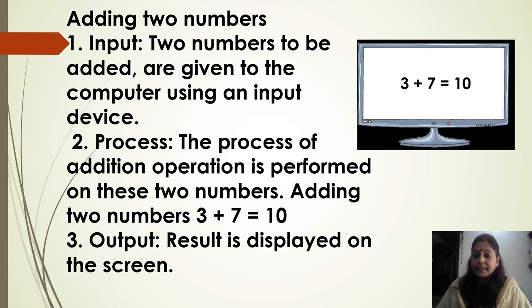Adding two numbers, that is 3 plus 7 equals to 10. You can see the figure 3 plus 7 equals to 10. Output means result is displayed on the screen. The 3 plus 7 equals to 10. This is called result. That is called output.